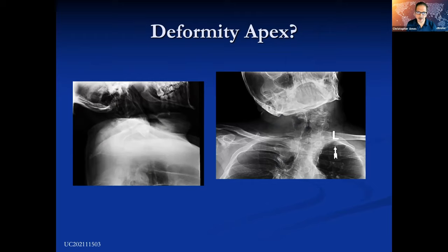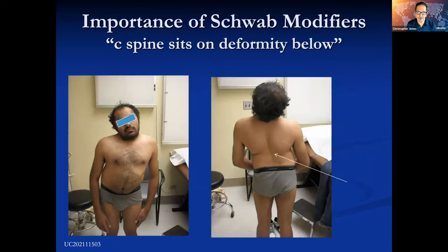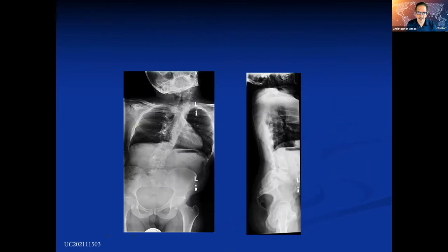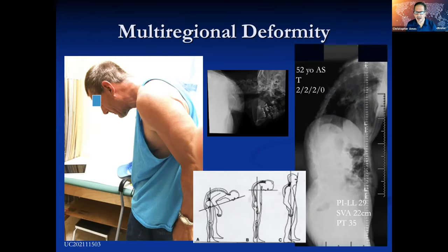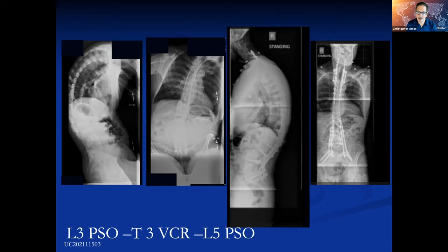How about this patient? He has primarily an appearance-related complaint — he's an adult. We get three-foot films. He was really complaining about his neck, not his low back or thoracolumbar spine. This patient actually didn't need a neck operation even though that was his primary complaint. He needed a hemivertebrate resection with spontaneous resolution of his cervical alignment. For the ankylosing spondylitis patient, we want to realign while maintaining a little head-down position so the patient can be stable walking downstairs. That patient needed initially a thoracolumbar osteotomy and ended up needing more osteotomies to get a good final correction.